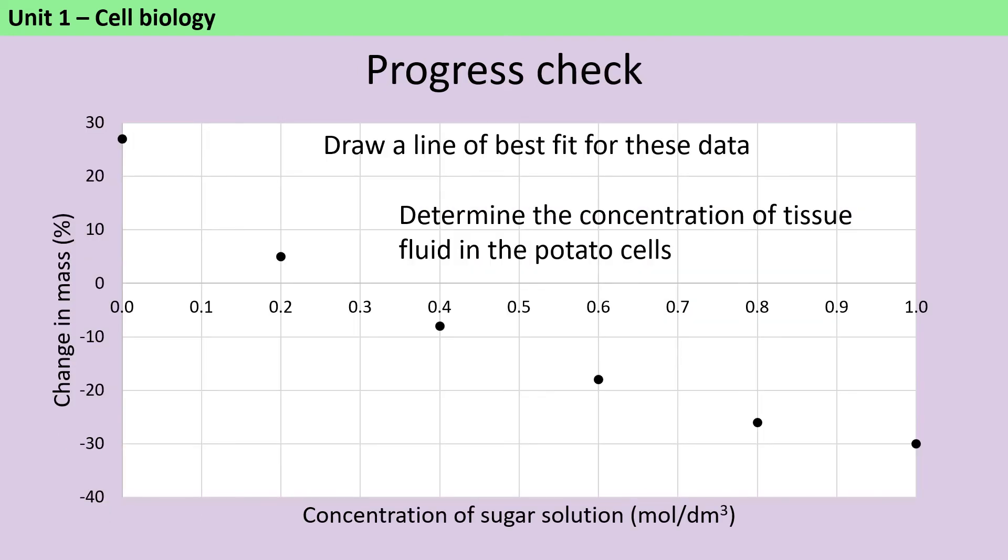In addition to being asked to calculate the change in mass for each piece of potato and the percentage change in mass, you may be asked to plot this data onto a graph, draw a line of best fit and determine what the concentration of the fluid inside the cells is. It's obviously a little bit tricky for you to draw a graph for me, but we can get you to draw a line of best fit and work out the concentration.